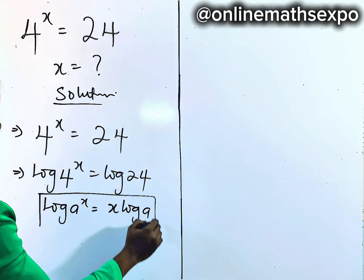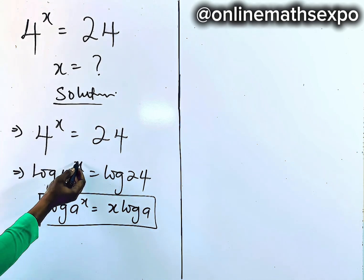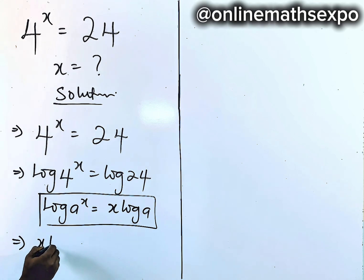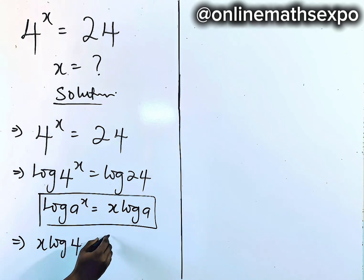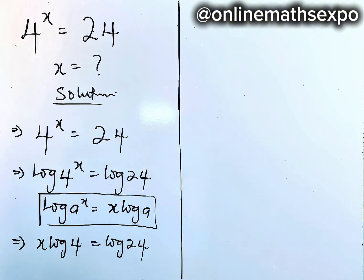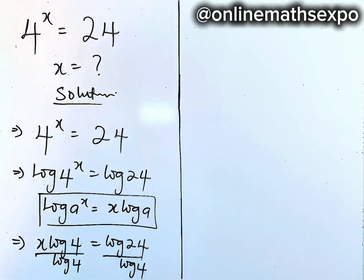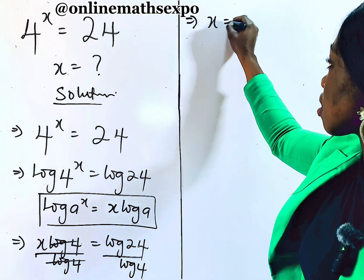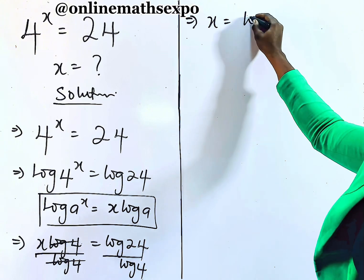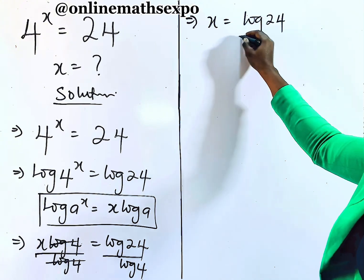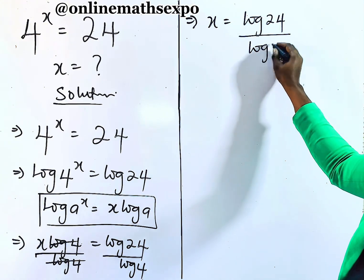We apply this on the left side, so the x multiplies. It gives us x·log 4 is equal to log of 24. To get x, we see that these two are multiplying, so we're going to divide both sides by log of 4. This gives us x is equal to log of 24 divided by log of 4.